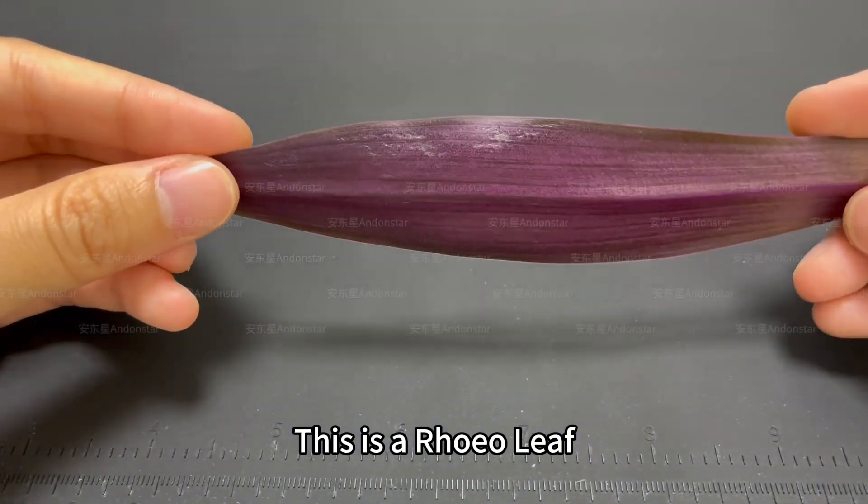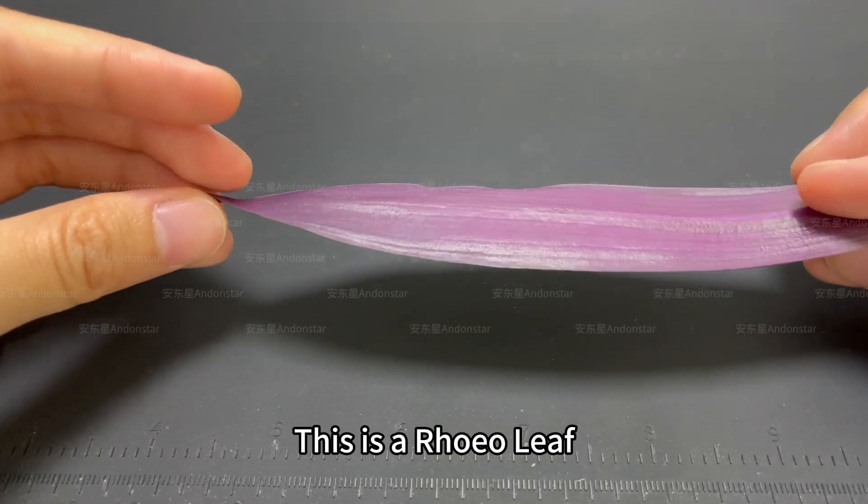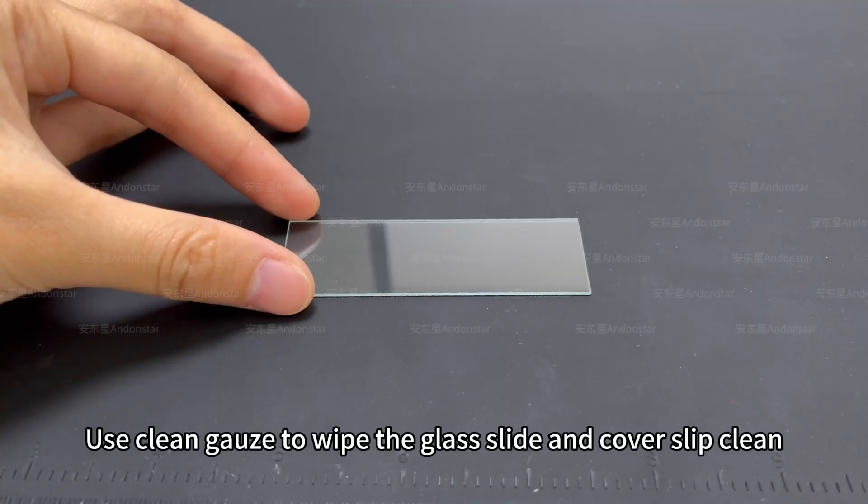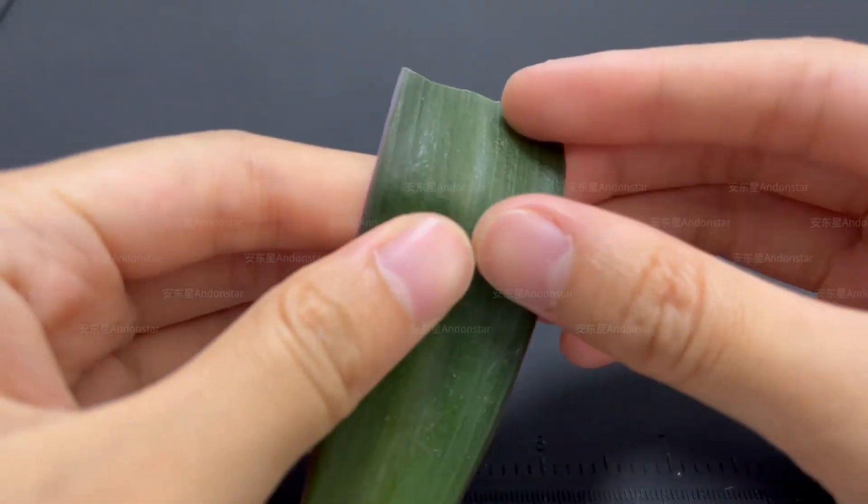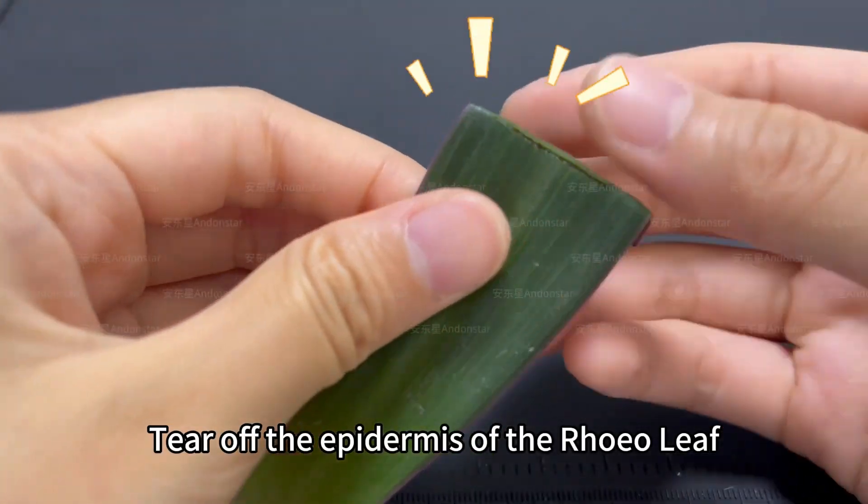This is a royal leaf. Use clean gauze to wipe the glass slide and cover slip clean. Tear off the epidermis of the royal leaf.